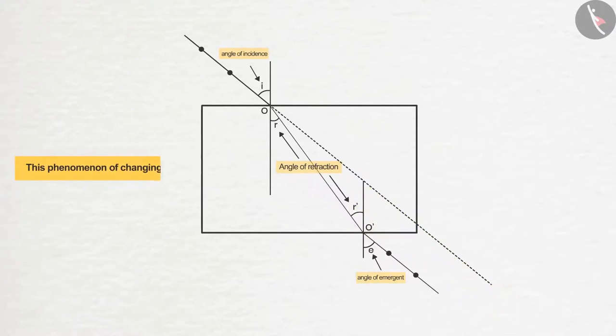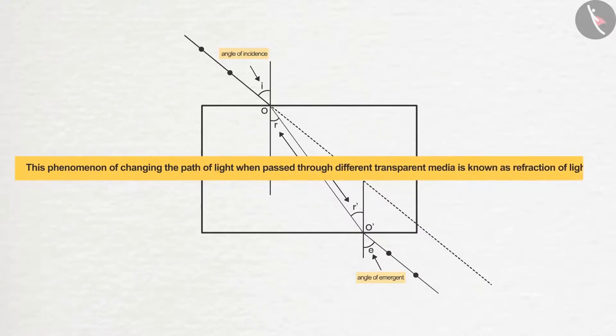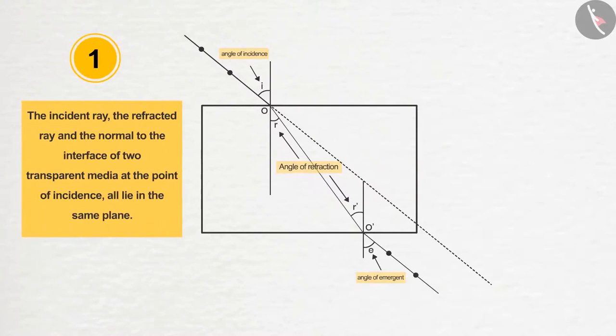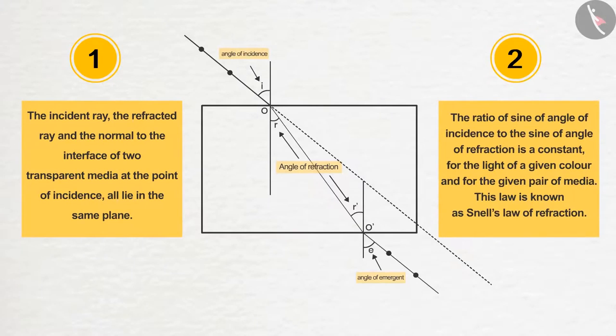This phenomenon of changing the path of light when passed through different transparent media is known as refraction of light. The incident ray, the refracted ray, and the normal to the interface of two transparent media at the point of incidence all lie in the same plane. The ratio of sine of angle of incidence to the sine of angle of refraction is a constant for the light of a given color and for a given pair of media. This law is known as Snell's law of refraction.